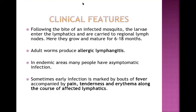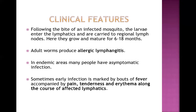Following the bite of an infected mosquito, larvae enter the lymphatics and are carried to regional lymph nodes, where they grow and mature for 6 to 18 months - a long incubation period. In endemic areas, many people have asymptomatic infection. Early infection may present with bouts of fever accompanied by pain, tenderness, and erythema along the course of the affected lymphatics. Lymphangitis and lymphadenitis are early pictures of filariasis.